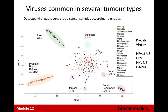We also looked at viruses. We didn't find any new viruses — these are all known already, such as HPV-16 in cervix and head-and-neck cancer, and HBV in liver cancer. Unfortunately, no new viruses came out of this project, but it does reconfirm what we already know.